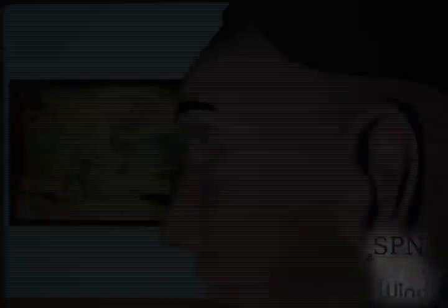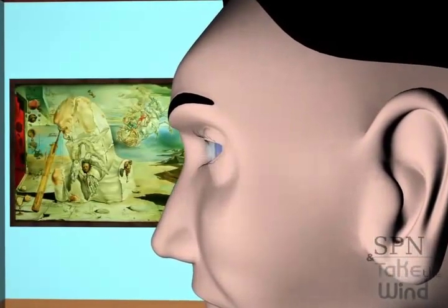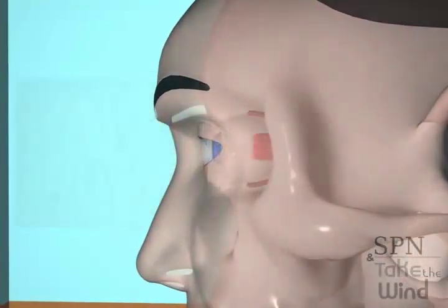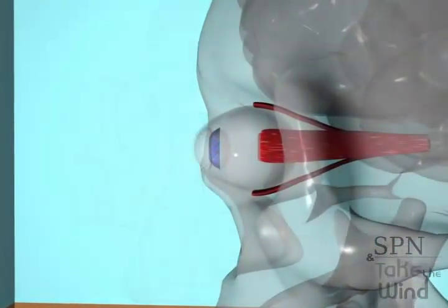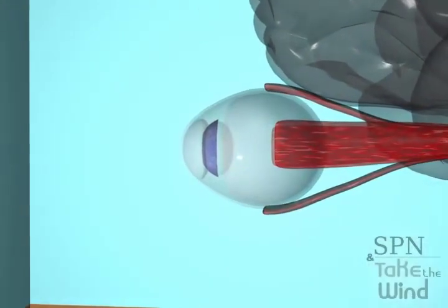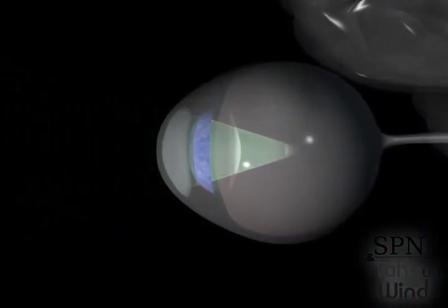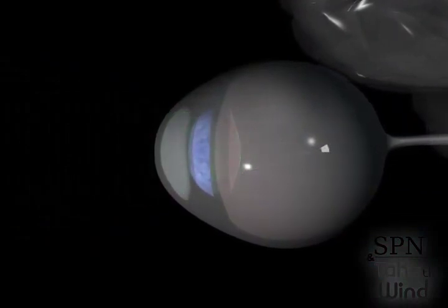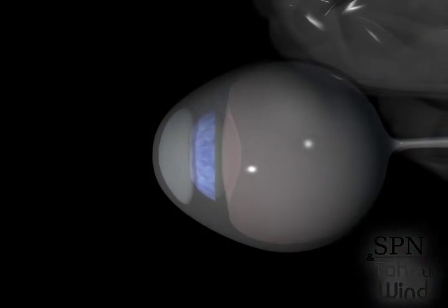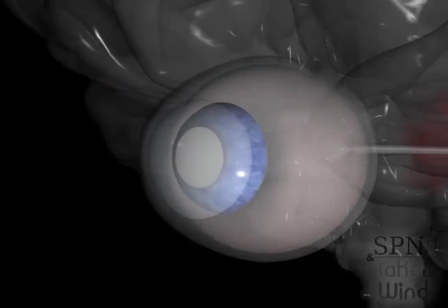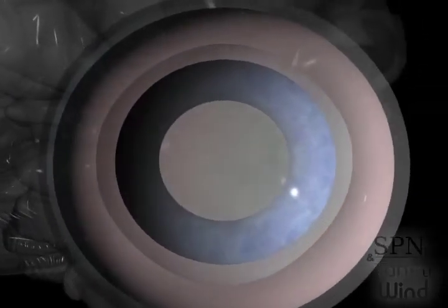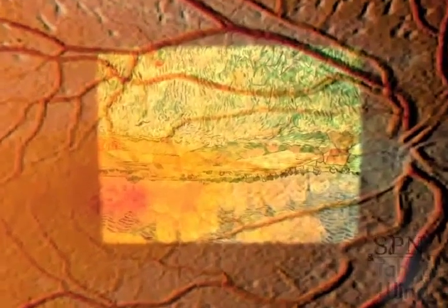Let's go back to the beginning once more and observe how the eye detects the electromagnetic radiation reflected from objects. Light passes through the cornea, pupil, and lens on its way to the retina, where the visual scene is focused. The lens projects an inverted image onto the retina, the same way a camera lens projects an inverted image onto a film.